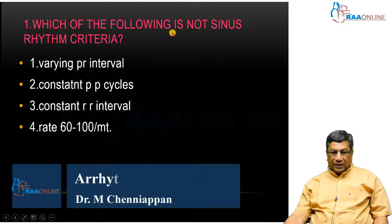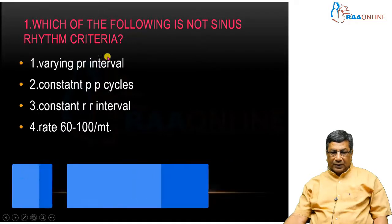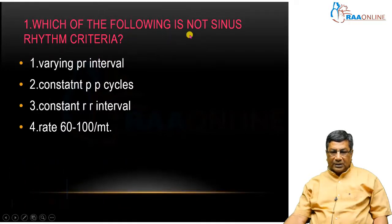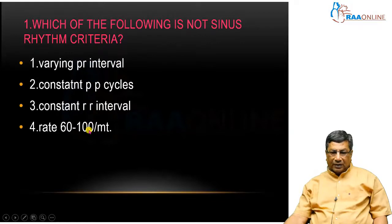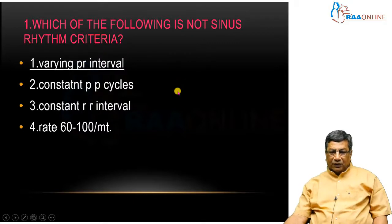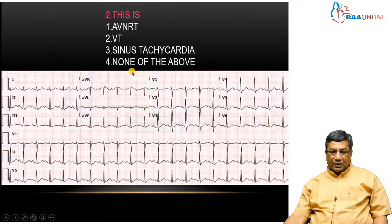Which of the following is not a sinus rhythm criterion? An arrhythmia is a rhythm other than normal sinus rhythm. The options include varying PR interval, constant PP cycle, constant interval, and constant rate. The PR interval is also constant in sinus rhythm, so a varying PR interval may not constitute sinus rhythm.